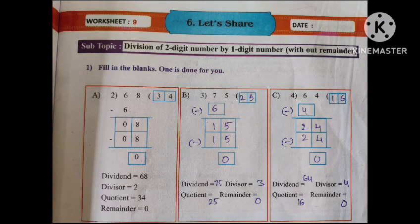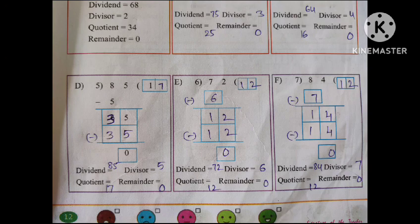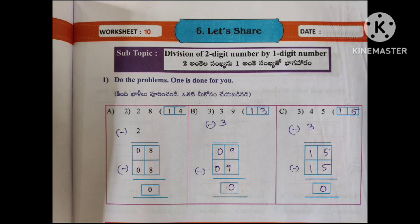Next, Worksheet 9: Fill in the blanks — one is done for you. Follow the same model. Components: Divider, Dividend, Question, Remainder — for example 5 and 6. Do the problems; one is done for you.